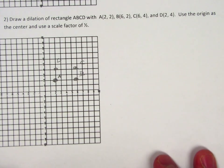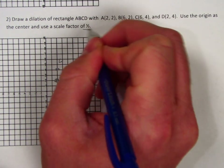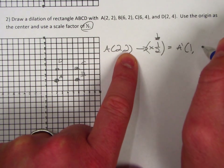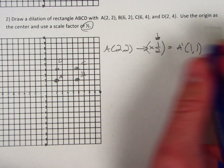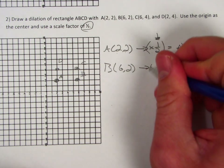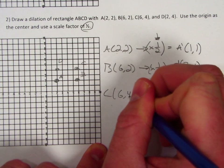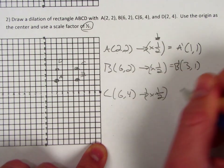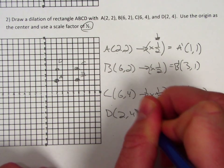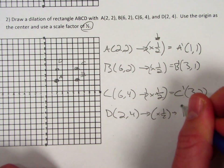With A at (2, 2) and a scale factor of one-half, I multiply each coordinate by one-half. Two times one-half is one, so A prime is (1, 1). For B at (6, 2), multiplying by one-half gives B prime at (3, 1). C at (6, 4) becomes C prime at (3, 2). And D at (2, 4) times one-half becomes D prime at (1, 2).